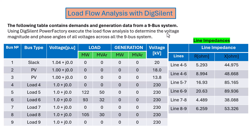After executing a load flow analysis on the network, we're going to determine all the missing elements on the network. That will be your voltage and your phase angle magnitude. Stay tuned and make sure you pay attention because this topic is very crucial in power system engineering.